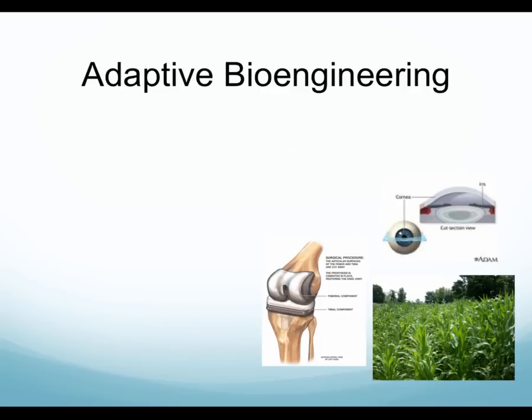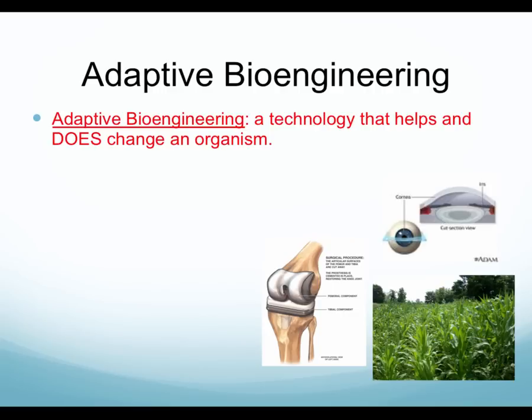Adaptive bioengineering refers to technologies that help an organism but also change the organism. Unlike assistive bioengineering, which helps without changing, adaptive bioengineering does change the organism. The beginning of the word 'adaptive' is 'adapt,' which means to change. With adaptive bioengineering, the technology is going to change the organism.